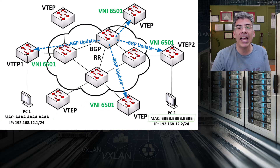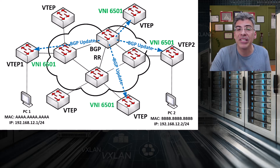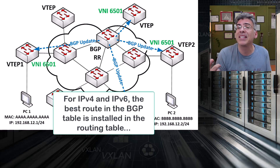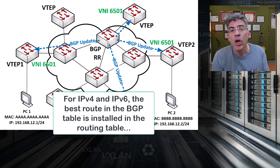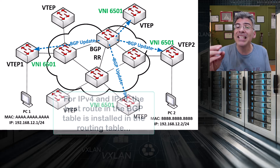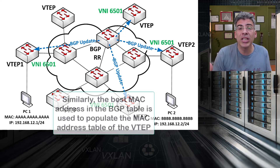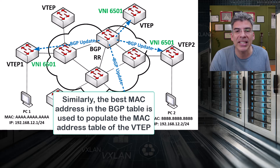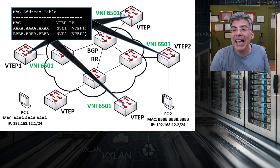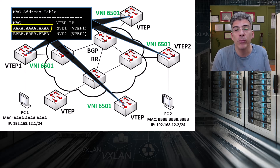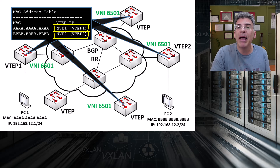Now it's not enough that the MAC address of PC1 enters the BGP table of VTEP 1 here — we need to have that information enter the local MAC address table. When using BGP for IPv4 or IPv6, the best route that is determined by the BGP table will enter the routing table to be used for routing. A similar mechanism takes place here. Using the EVPN address families, the best MAC address that exists in the BGP table will be used to populate the MAC address table. So if we were to look at the MAC address tables of all VTEPs that contain VNI 6501, we'd see two entries — one for the MAC address of PC1 and one for the MAC address of PC2. In a real MAC address table, we'd have the actual underlay IP address that corresponds to that VTEP.